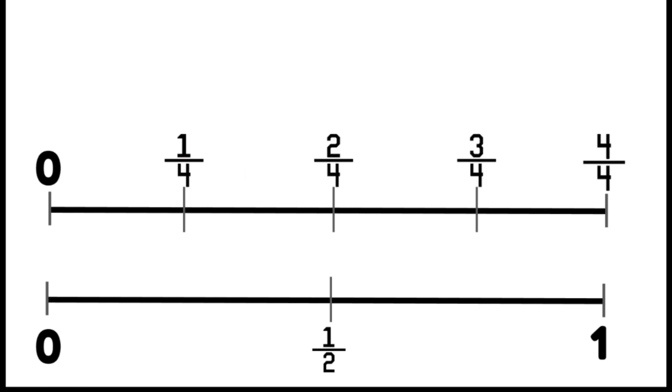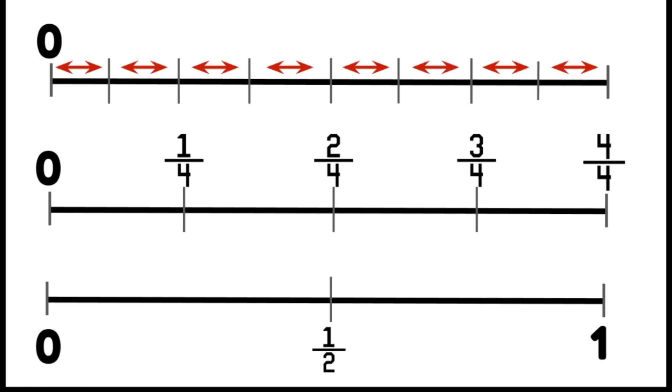We're then going to draw a third number line. This time we're going to divide it into eight equal parts. We're dealing now with eighths. Our denominator is eight and so therefore our number line must be divided into eight parts.